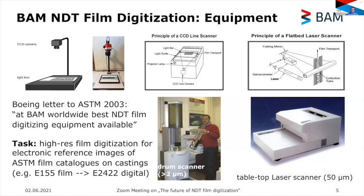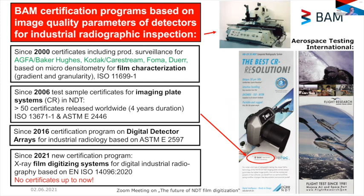Nowadays, all radiography is done with digital detector arrays, so the old ASTM casting reference radiograph catalogs needed to be converted into digital electronic reference catalogs. We did this task for ASTM — gluing large casting films onto the drum and scanning at 10-micrometer resolution. In 20 minutes we obtain 2 gigabytes of data per film, illustrating the range of technology available for film digitization.